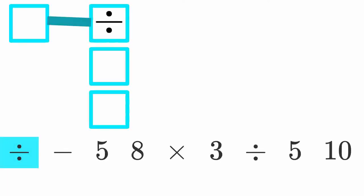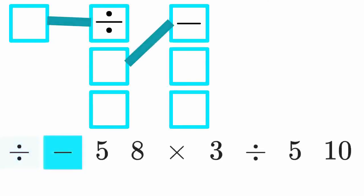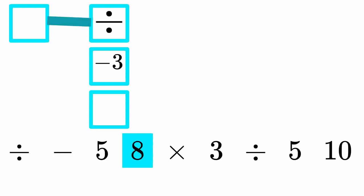It starts with division, so we need to figure out what two numbers to divide. Next, we encounter a minus sign, so let's figure out what to subtract. 5 and 8. 5 minus 8 equals negative 3, so that's the first number to divide.